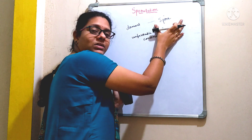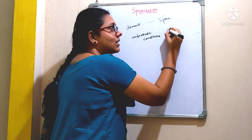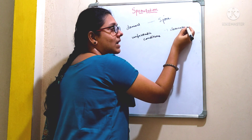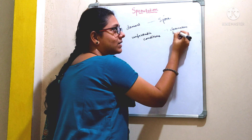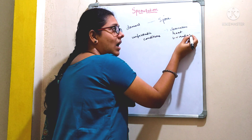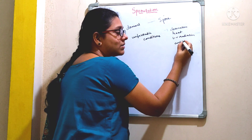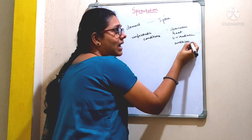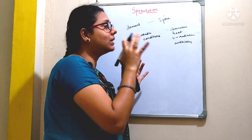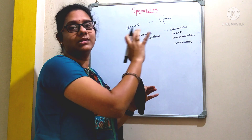These spores are resistant to desiccation, heat, they are resistant to UV radiation and they are highly resistant to antibiotics also. I will tell you why and how these spores are formed. But first, let us discuss about the characteristics of a spore.